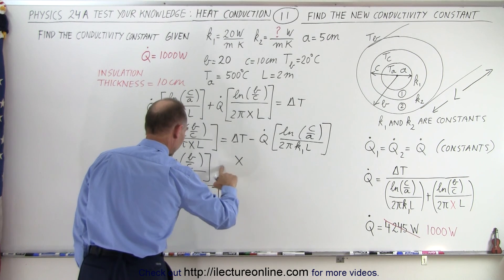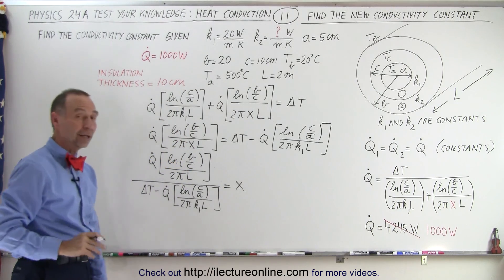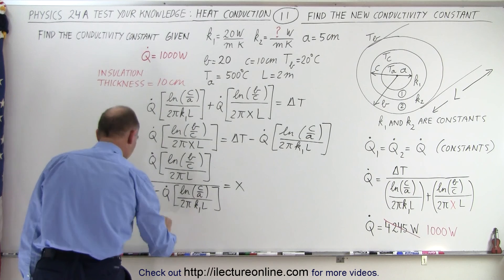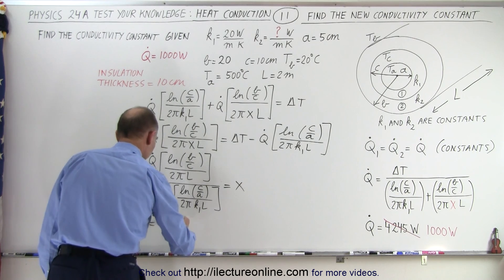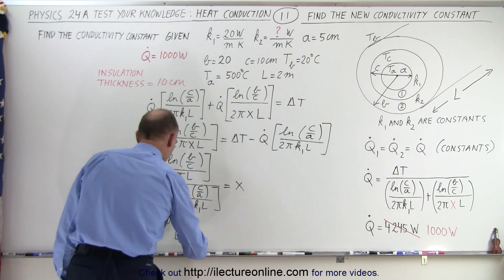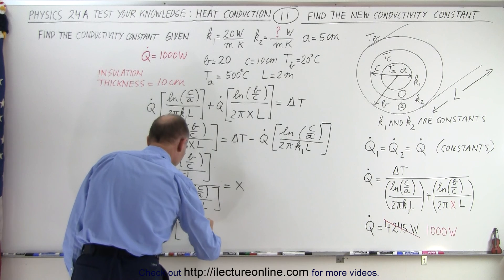And that equals X. So let's go ahead and write it like equals X, like that. Now all we have to do is plug in some numbers and see what we get. So X is equal to Q dot, which is a thousand, times the natural log of B over C. Now B is 20, C is 10.